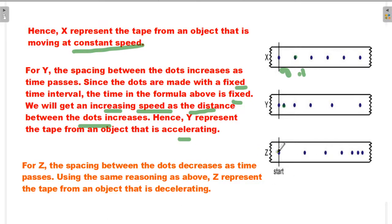For Z, the spacing between the dots decreases as time passes. Using the same reasoning as above, Z represents the tape from an object that is decelerating.